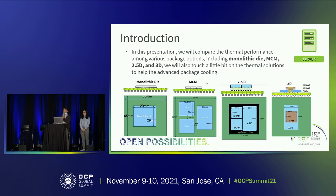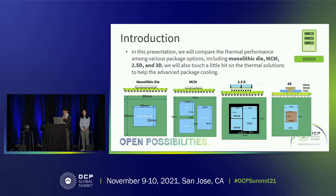For this study we have two SRAMs and one ASIC. For MCM and 2.5D, the die size will be the same, but the design will be different — the gap distance will be different. We consider not only the thermal but also the electrical and the layout. For the monolithic die, we have only one die, which is slightly smaller because it performs all the functions of the SRAM and ASIC. The right figure is the 3D stack-up structure — two SRAMs on top, with the ASIC, and then the substrate. For 2.5D, we have an interposer between the silicon and the substrate.